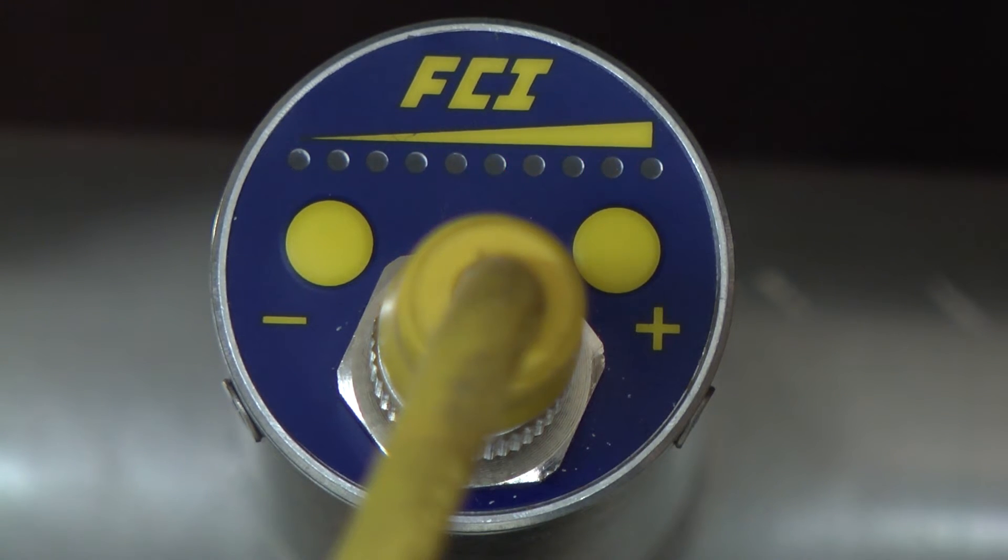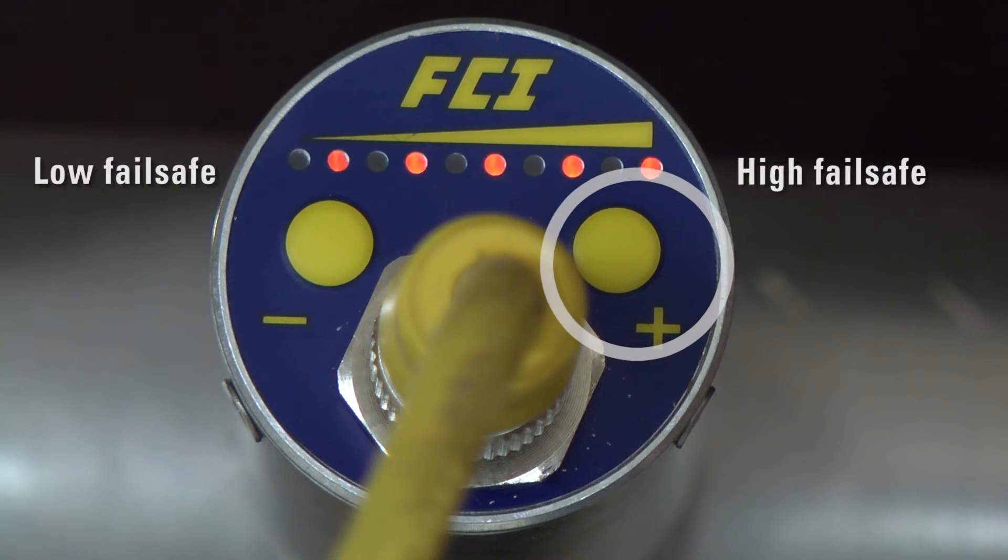Now momentarily press the minus button to exit with a fail safe low—that is, relay is de-energized in the alarm state—or the plus button for fail safe high—that is, relay de-energized above the setpoint.